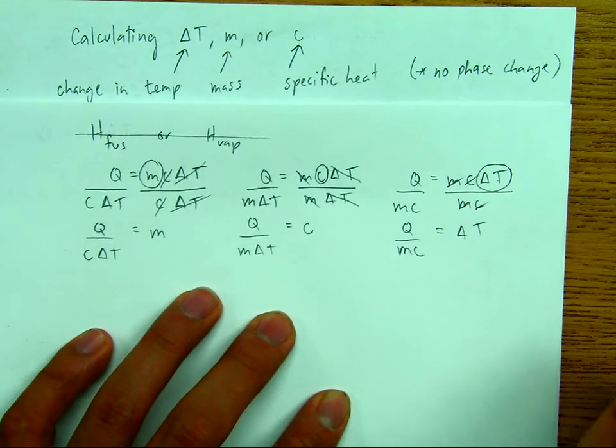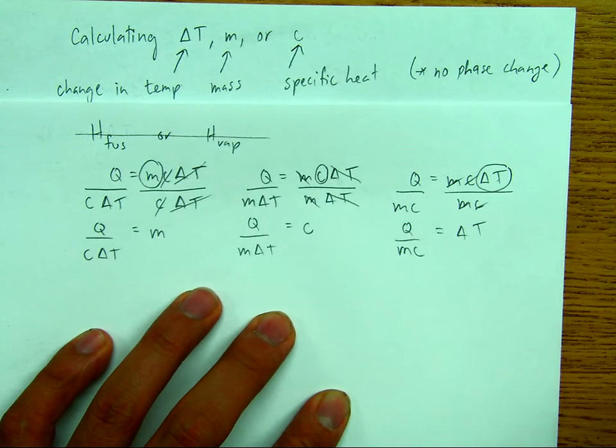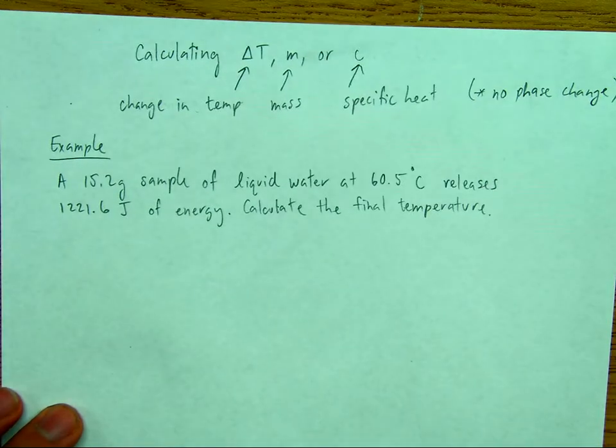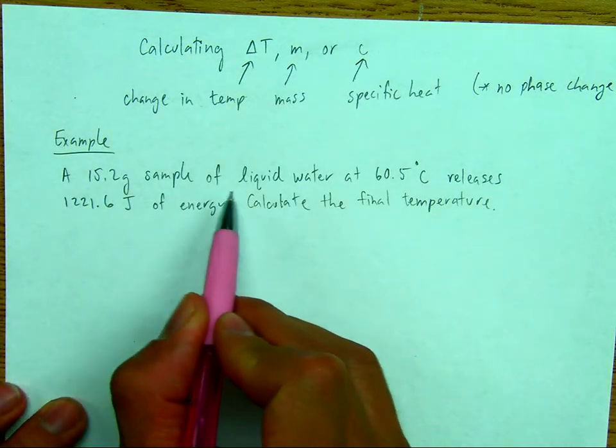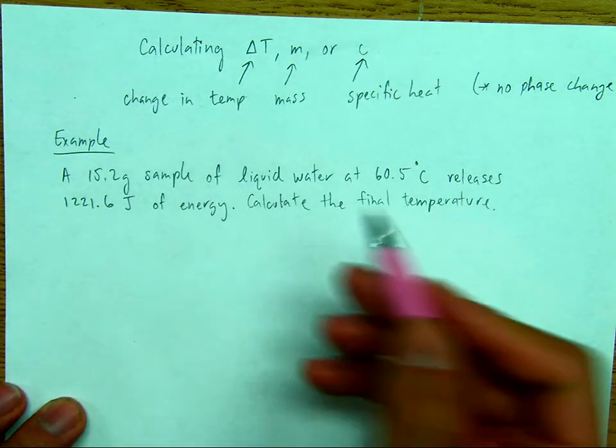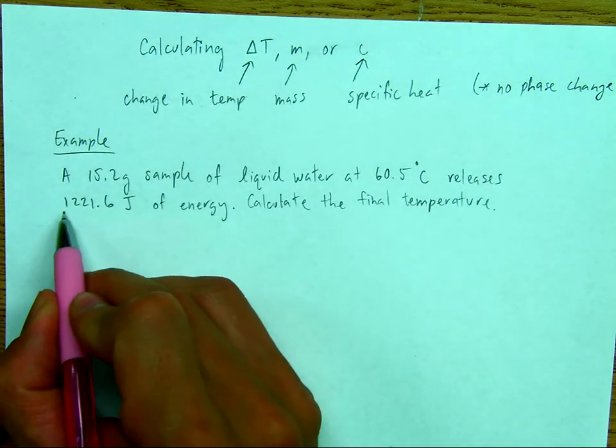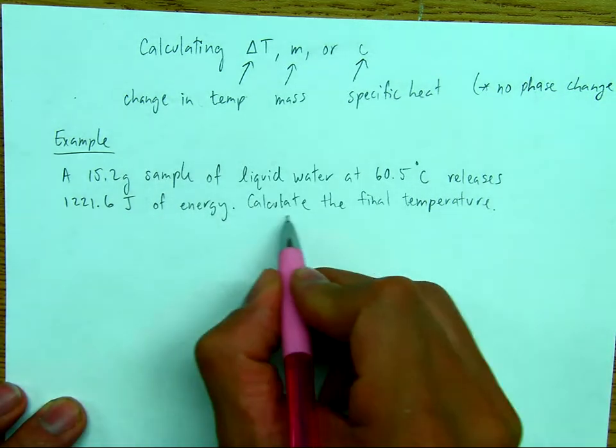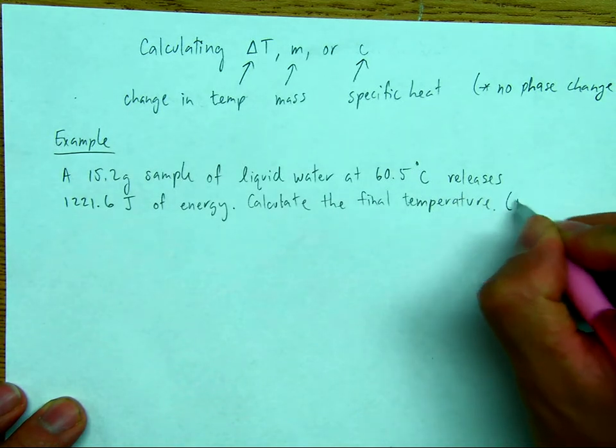So it all depends on what the question gives you. I'll write down all of your knowns and there should be one unknown. Isolate for that unknown and we're good to go. Okay. So the problem that we're going to work out here is there's a 15.2 gram sample of a liquid. It's H2O at 60.5 degrees Celsius. And it's going to release 1,221.6 joules of energy. Our job is to calculate the final temperature.